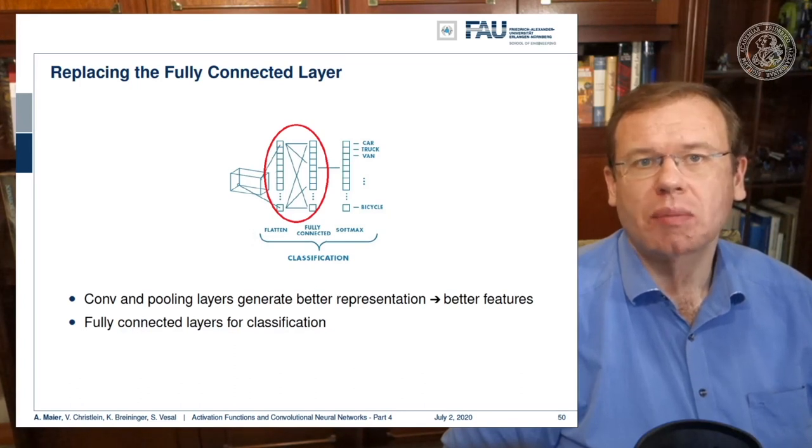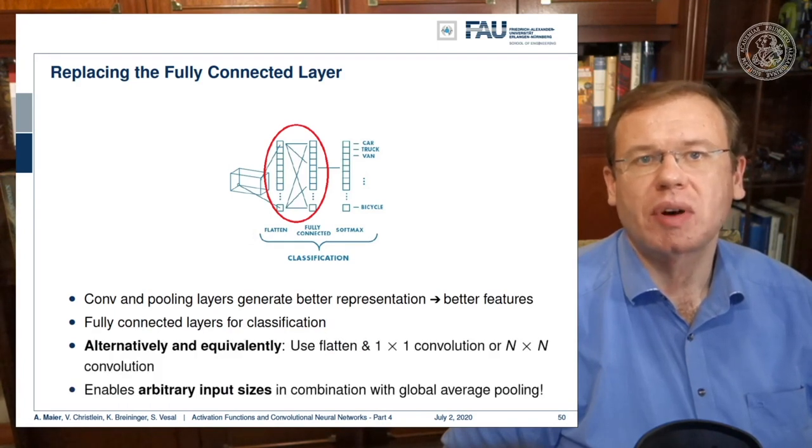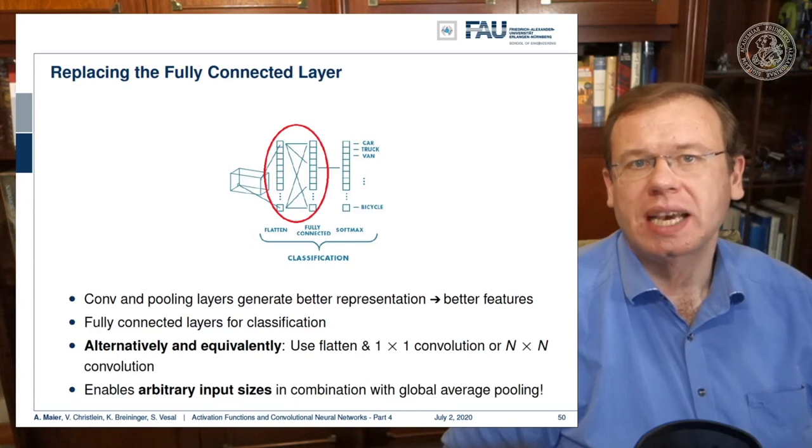The nice thing about the one by one convolutions is if you combine this with something that is called global average pooling, then you can essentially also process input images of arbitrary size. So the idea here is then at the end of the convolutional processing you simply map into the channel direction and compute the global average for all of your inputs. This works because you have a predefined global pooling operation. Then you can make this applicable to images of arbitrary sizes. So again we benefit from the ideas of pooling and convolution.